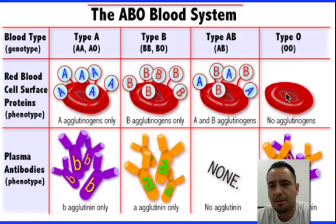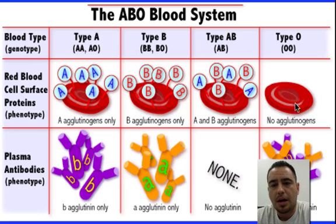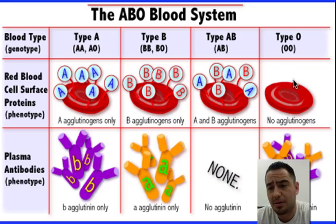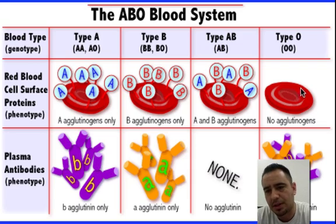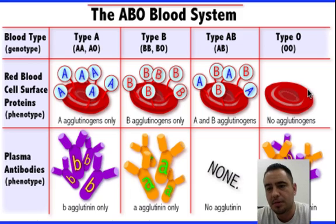Then you have blood type O. Someone with blood type O has nothing on the surface — there is no protein. This is very important because if they get blood type A or B, they're not going to recognize it, they're going to destroy it and make antibodies against it. When that happens, the blood starts clotting — it starts aggregating and sticking together — and it can cause a very strong immune response and possibly death.